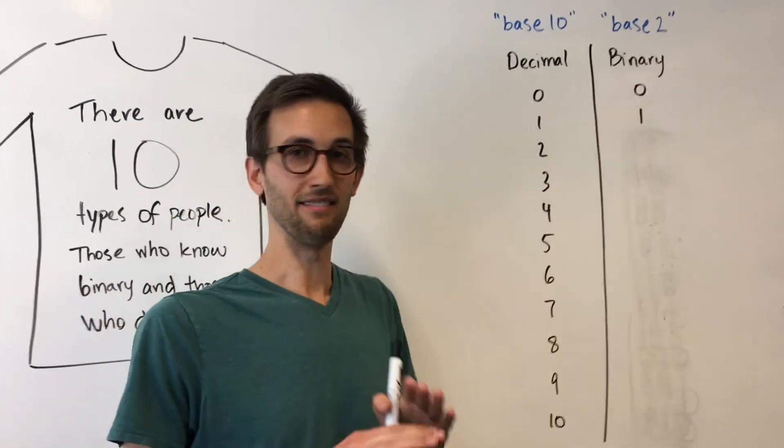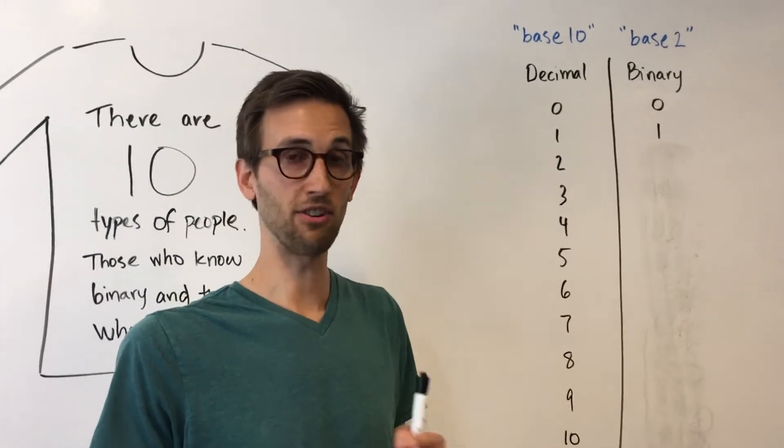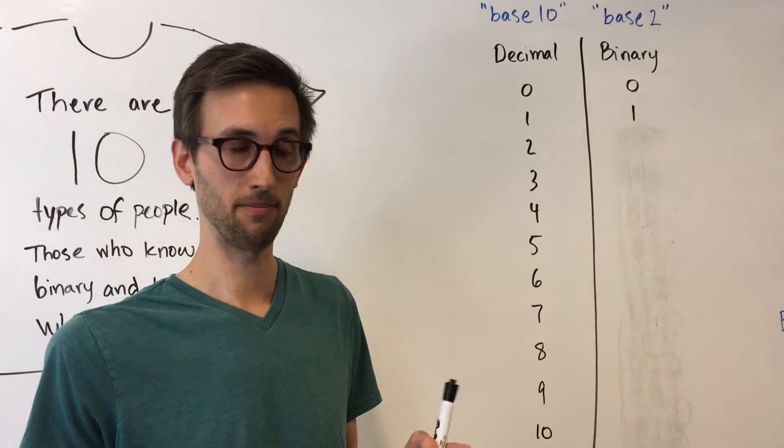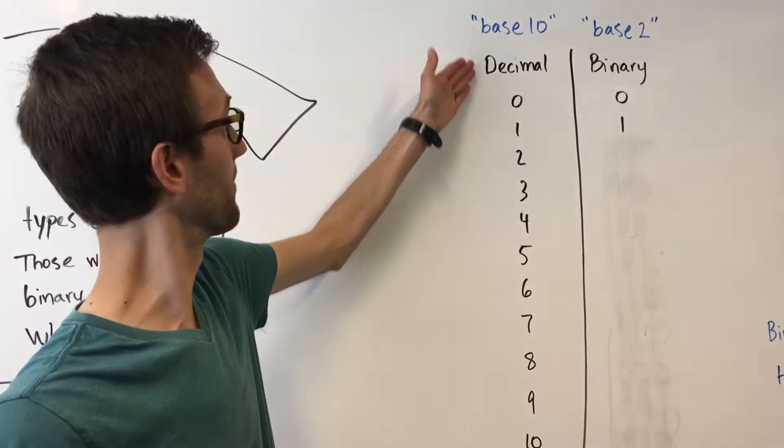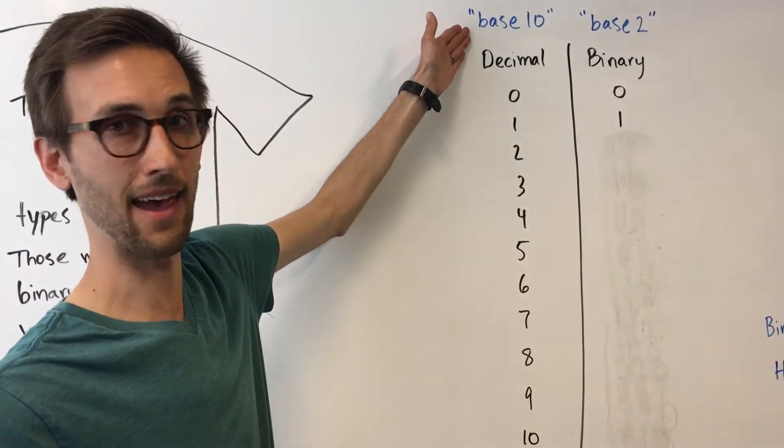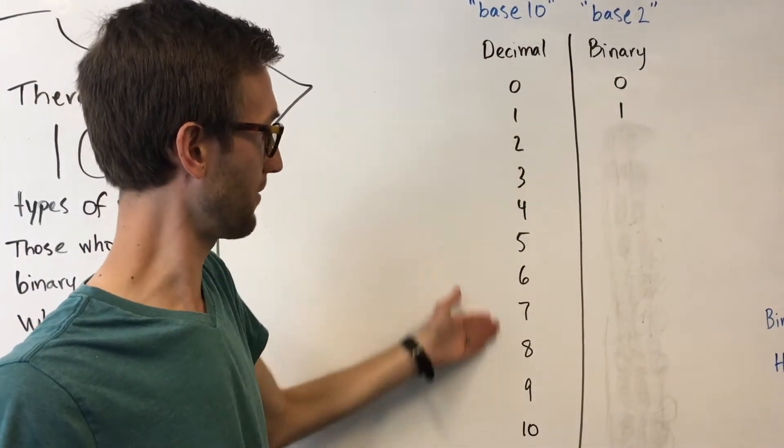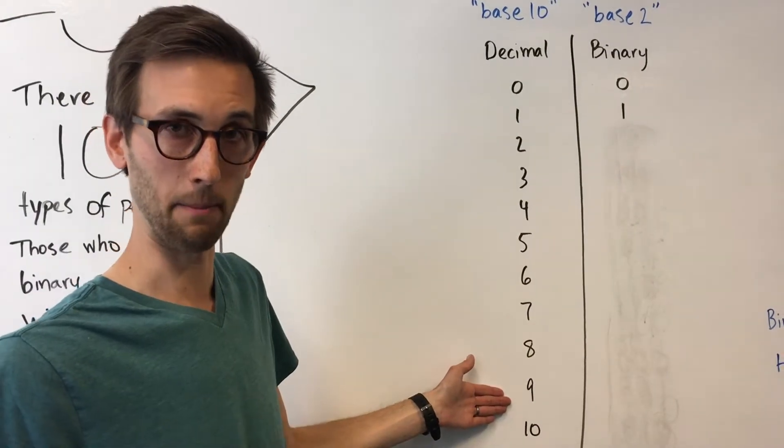So binary is not actually a secret code. It's just a different way to express numbers. The normal way we write numbers is what we call the decimal system. It's a base ten, which means that there are ten different symbols, zero through nine, to use to express numbers.